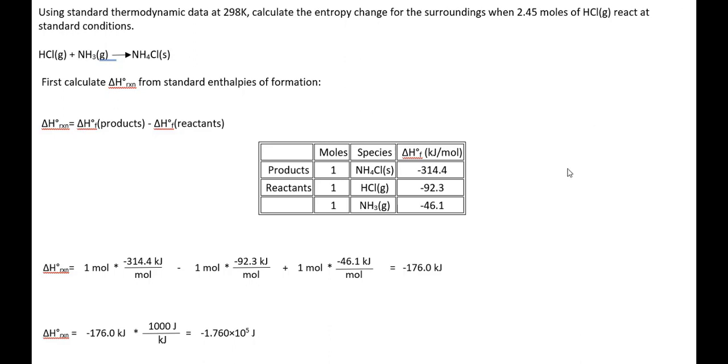Looking up the values for the delta H's and substituting into the equation, we have delta H of negative 176 kilojoules. We'll convert that to joules as we did before.